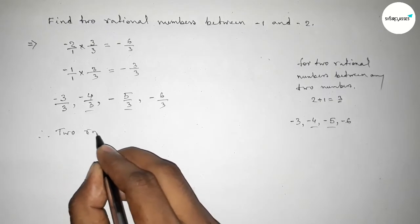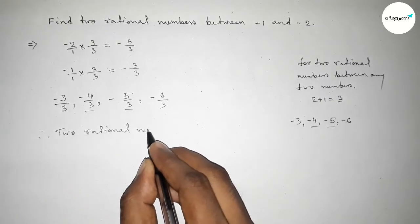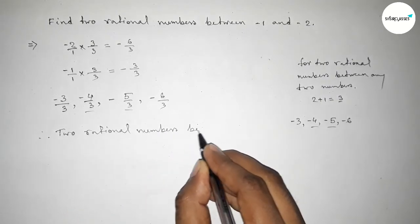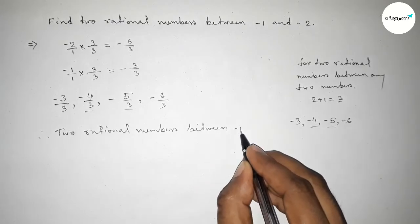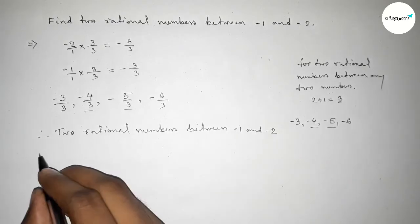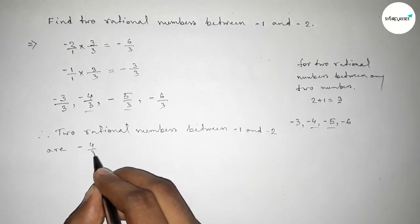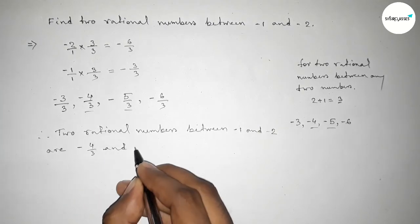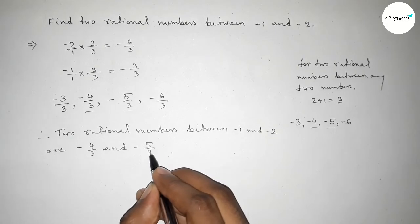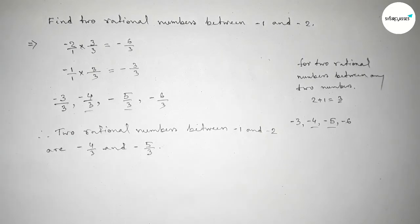The two required rational numbers between minus 1 and minus 2. You can get different rational numbers by any method. Okay, so therefore the two rational numbers between minus 1 and minus 2 are minus 4 over 3 and minus 5 over 3. So this is the process to find out two rational numbers between minus 1 and minus 2.